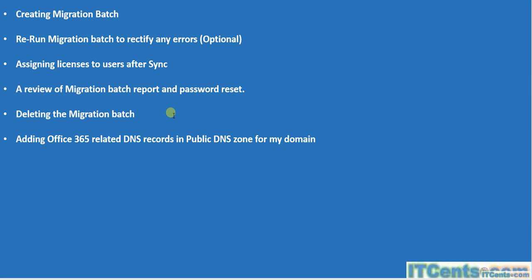We will assign licenses, and we may need to rerun the migration batch to rectify any errors or to resynchronize if on-premise mailboxes have more mail data than the cloud. By default it runs every 24 hours, but you can rerun it early. We'll review the migration batch report and CSV file, and I'll show a technique for bulk resetting passwords - either via Exchange PowerShell or the GUI.